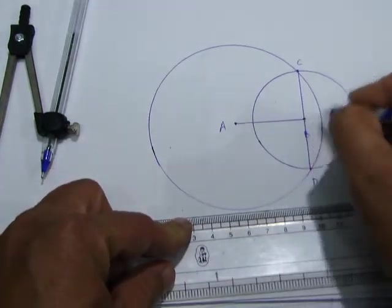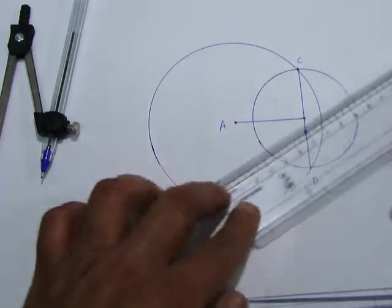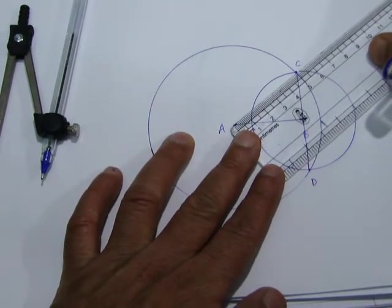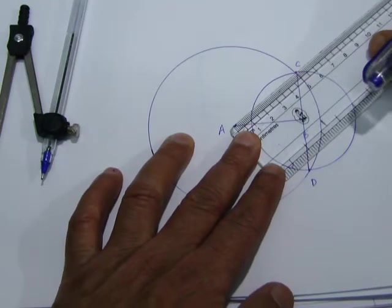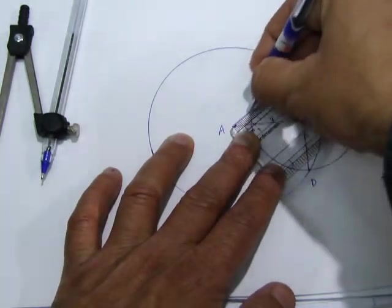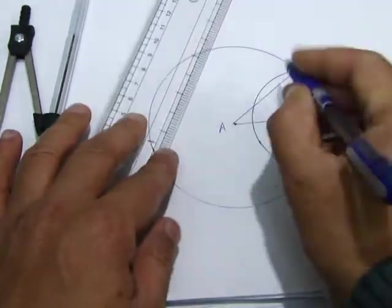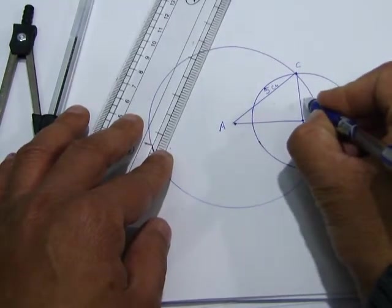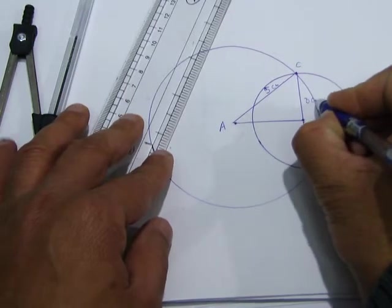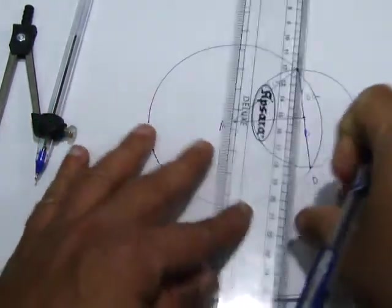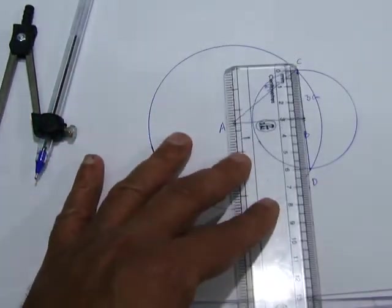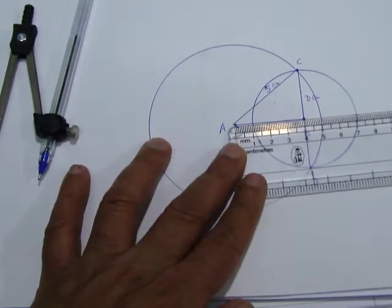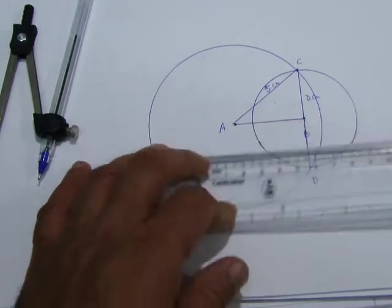BC is the radius of this circle and AC is the radius of this circle. So AC is 5 cm. BC is 3 cm. And AB, the distance between them, is 4 cm.